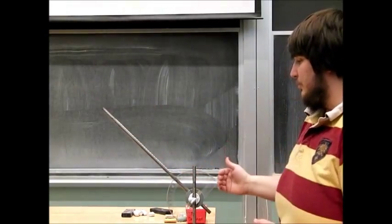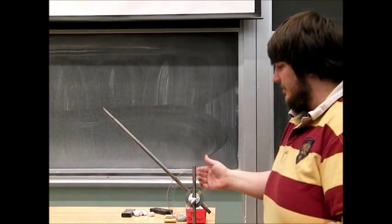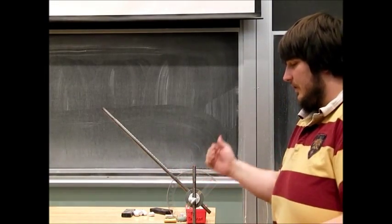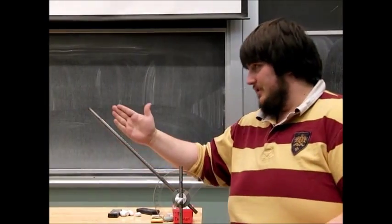Then there is a protractor attached to our steel rod, which allows us to measure the angle from the vertical that our rod is tilted.